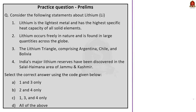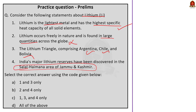In the lithium MCQ: statement one — lithium is the lightest metal and has the highest specific heat capacity of all solid elements — is correct. Statement two — lithium occurs freely in nature and is found in large quantities — is incorrect. Statement three — the lithium triangle comprising Argentina, Chile, and Bolivia — is correct. Statement four — India's major lithium reserves discovered in Salal-Haimana area of Jammu & Kashmir — is correct. So the answer is option C, 1, 3, and 4 only.